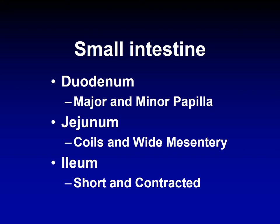Part of the jejunum can go through a mesenteric tear and become entrapped, and sometimes it gets entrapped in openings in the gastrointestinal tract and body — I will discuss this when I talk about colic. The jejunum is problematic because of its length, very long coils, smooth surface with no bands or sacculations, smaller diameter, and very wide mesentery, making it prone to movement issues. The ileum is very short and contracted — about 10 centimeters. Now I will talk about each structure separately, starting with the duodenum.